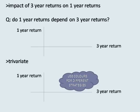For the impact of three-year returns on one-year returns – which allows us to think about whether longer term performance has an impact on shorter term performance – we have two numerical variables and so we should be using a scatter plot to visualise. Also have a think about what measure is useful for this type of bivariate data. Think about what trend you see and also discuss whether it is expected or not expected and why.